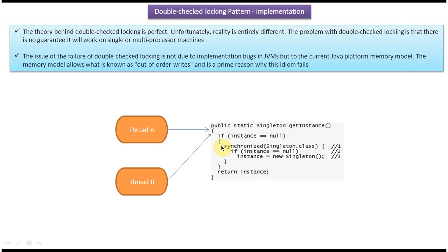From this line, thread A allows thread B to execute. When thread B reaches here, thread A has already put the lock, so thread B will be blocked here. Thread B allows thread A to continue its work. Thread A checks instance equals null — yes, it is null — so it creates the new instance, assigns it, and returns the instance. Then thread A exits the synchronized block.